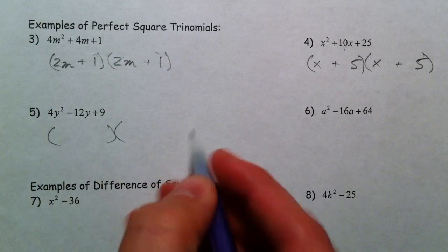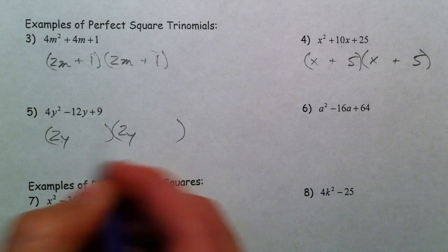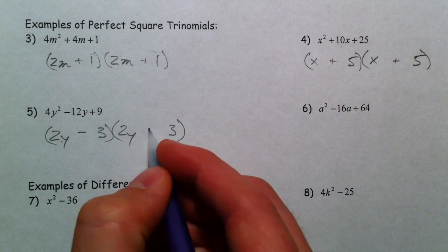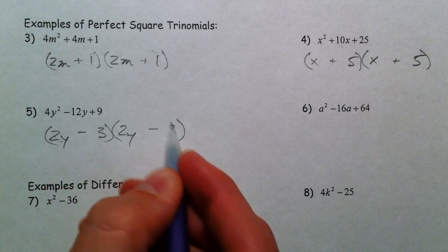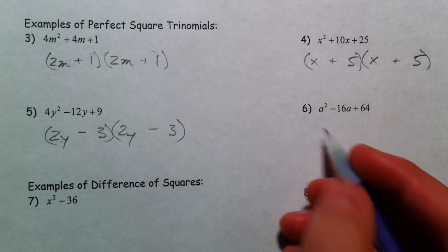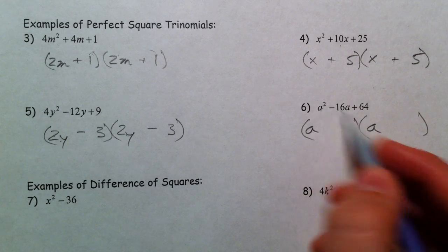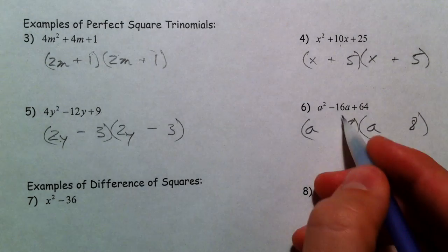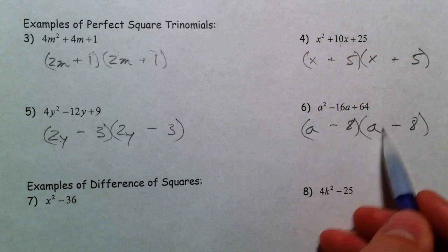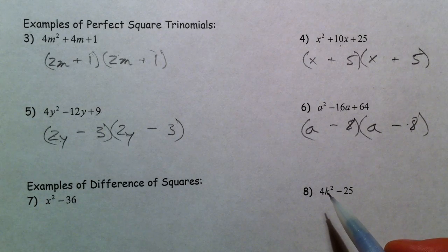For 4y²−12y+9: the square root of 4y² is 2y, and the square root of 9 is 3. Because the middle term is minus, I use (2y−3)²: that gives 4y², minus 6y, minus another 6y, and negative times negative is positive 9. For a²−16a+64: square root of a² is a, square root of 64 is 8. Again, because it's a minus, I get (a−8)²: a²−8a−8a gives −16a, and (−8)(−8) is +64.